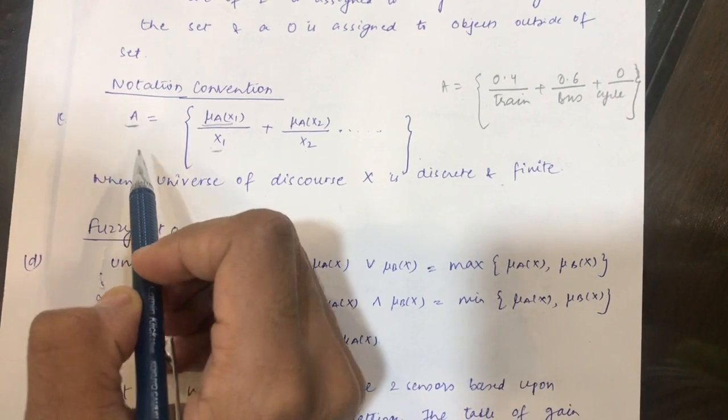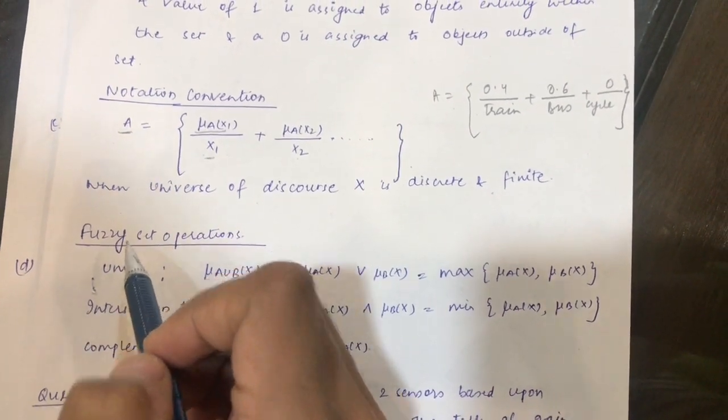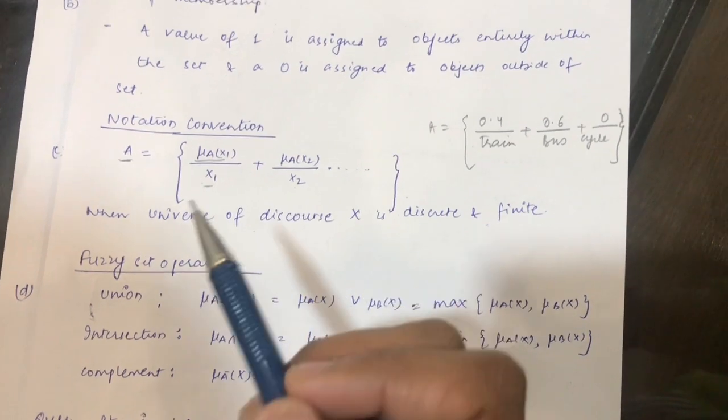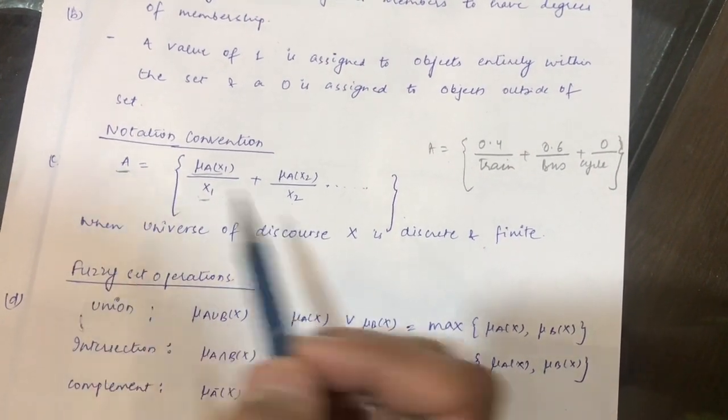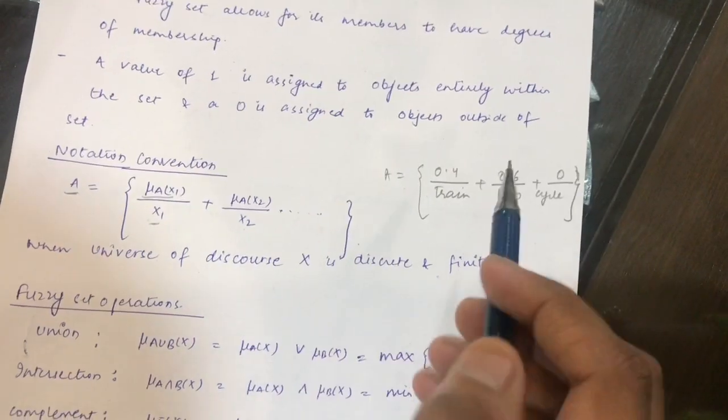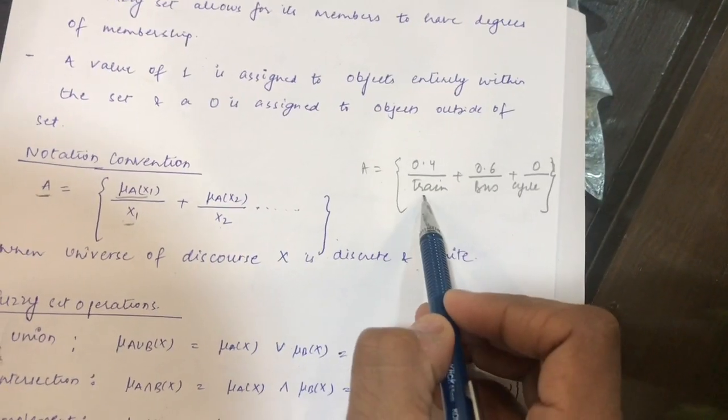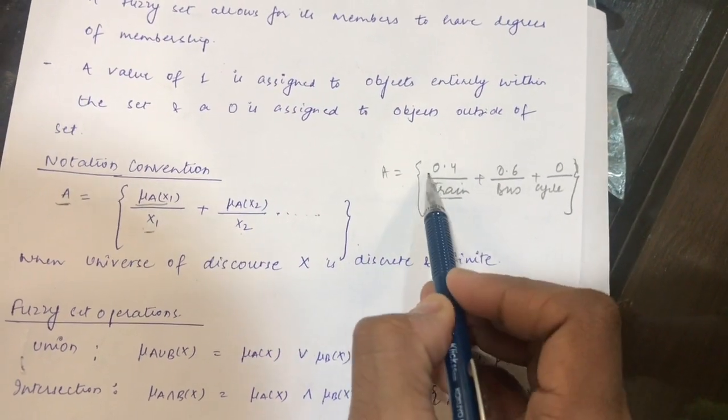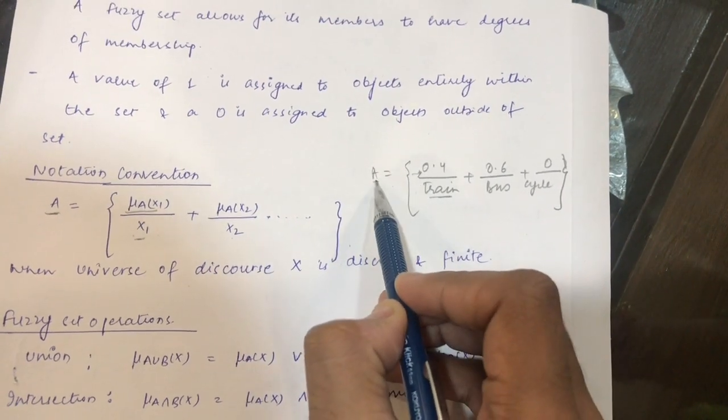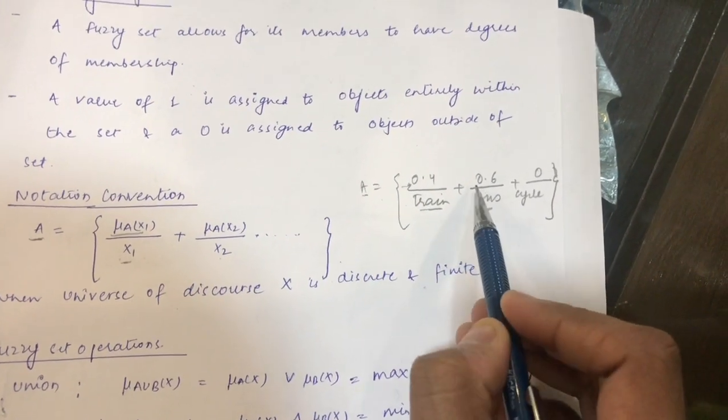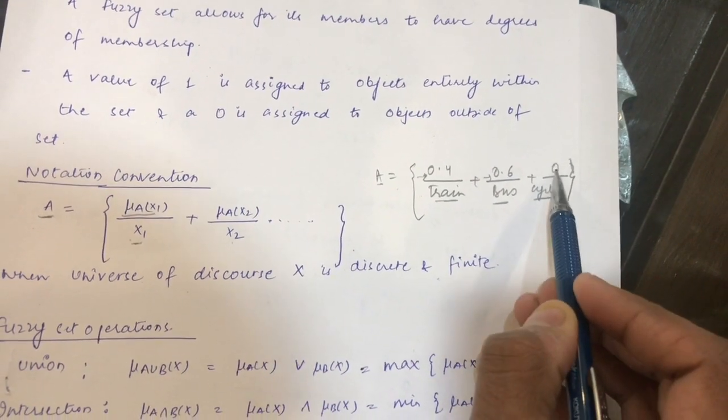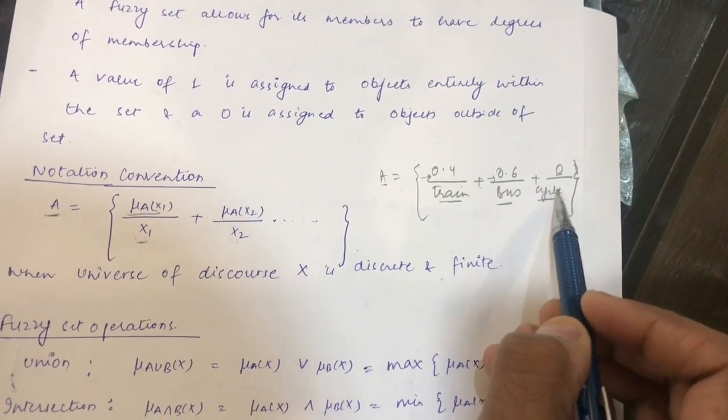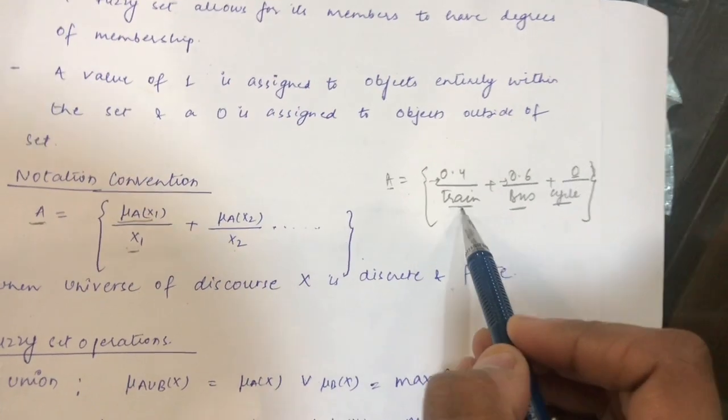For example, if we do a survey on a person who goes from city A to city B via train, bus, and cycle, how do we represent that using fuzzy set? We can represent this as: train has a membership of 0.4 associated with set A, bus has a degree of membership of 0.6, and cycle has a membership of 0. That means the person does not go by cycle; he goes only by train and bus.